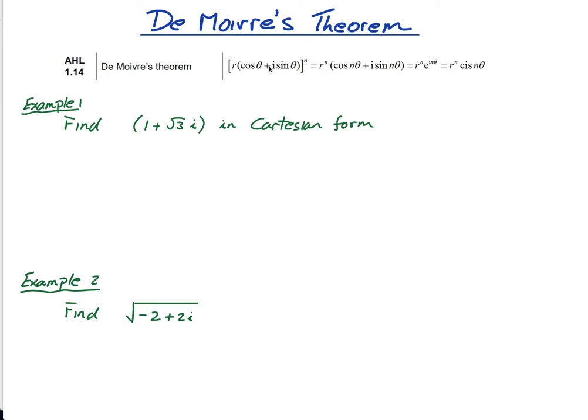So De Moivre's theorem is this: If you have a complex number raised to a power of n, then it equals r to the n times cos of n theta, so you multiply the theta by the n, plus i times sine of n theta.